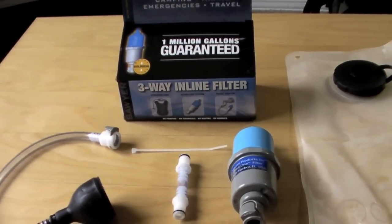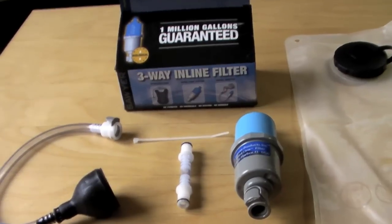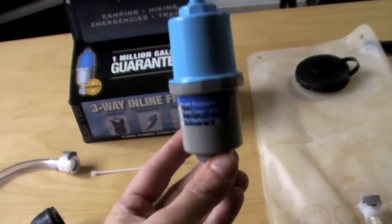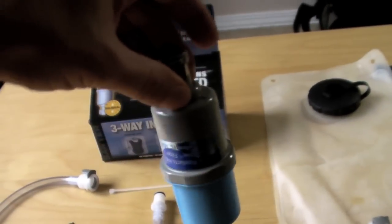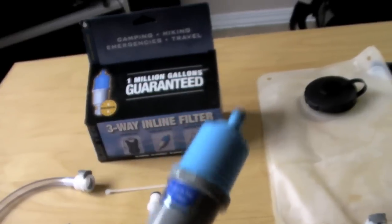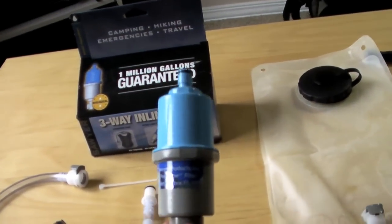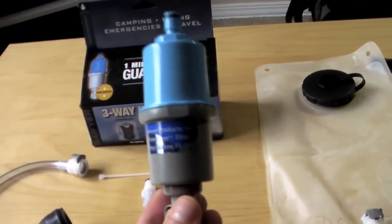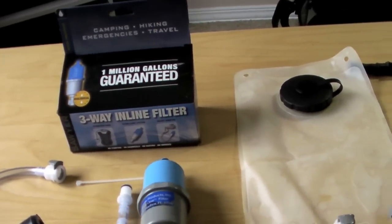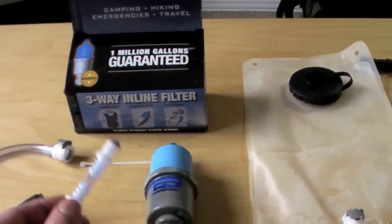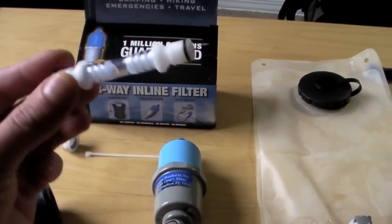It's a 0.001 micron filter, so it's good for taking out almost anything. The filter itself is also reverse flushable from a tap to clean it, which is a great feature. It has a guaranteed million gallon life on one filter with no changes. It comes with a little tube like this with a couple different fittings.